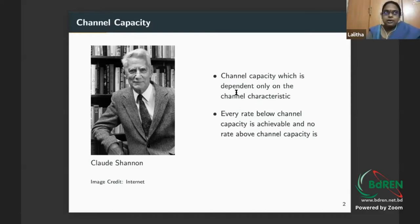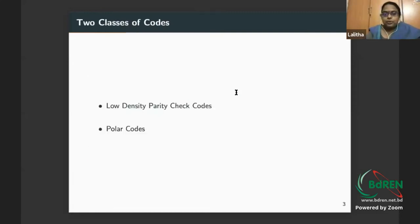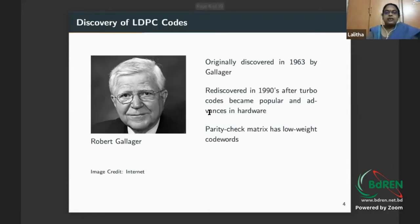There were two classes of codes which get very close to the capacity. One is called low density parity check codes, or LDPC codes, and the second class are polar codes. Polar codes achieve capacity, LDPC codes come very close.